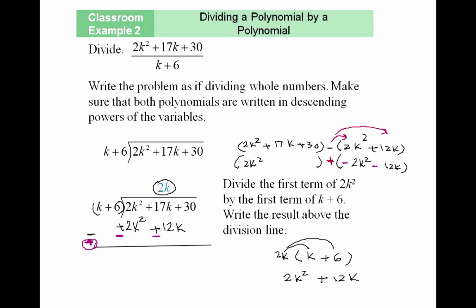Now we're adding 2k² + 17k + 30 to this. You'll see these two terms add up to zero. So what would be the remainder? 17k minus 12k is 5k, plus 30. So the remainder is 5k + 30.